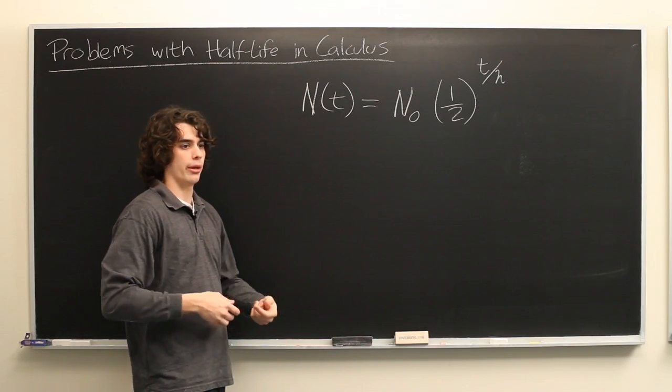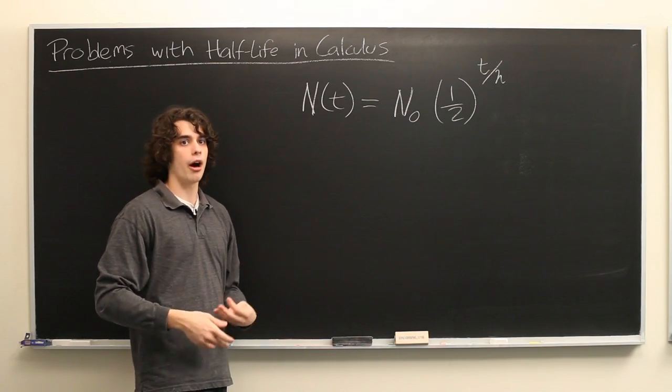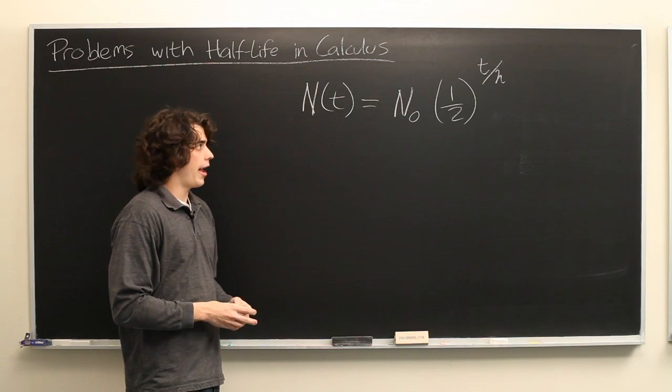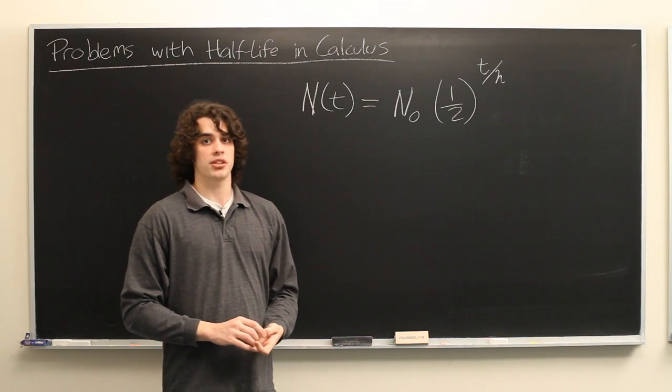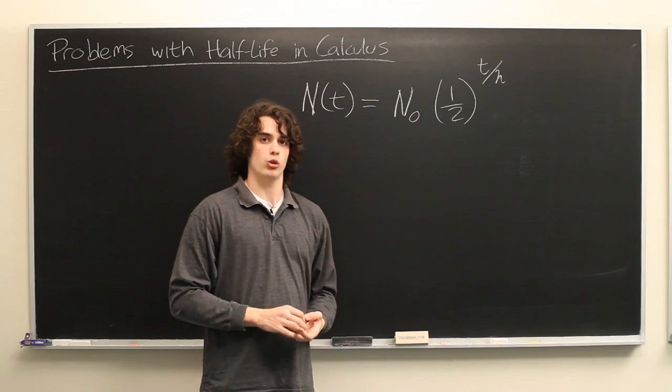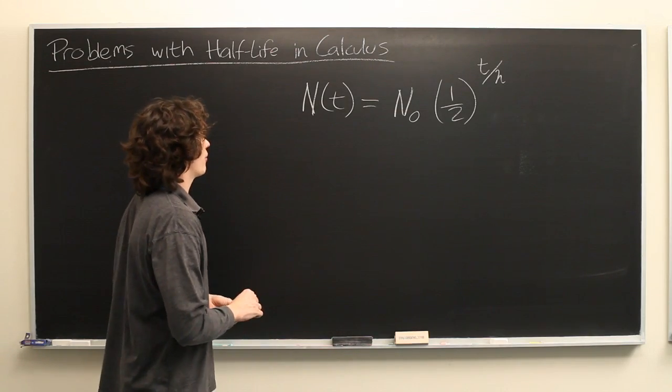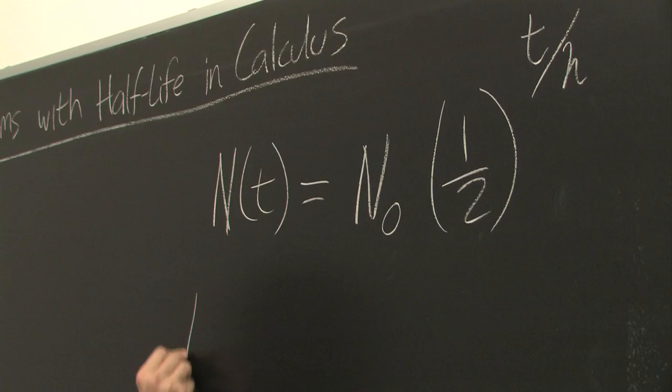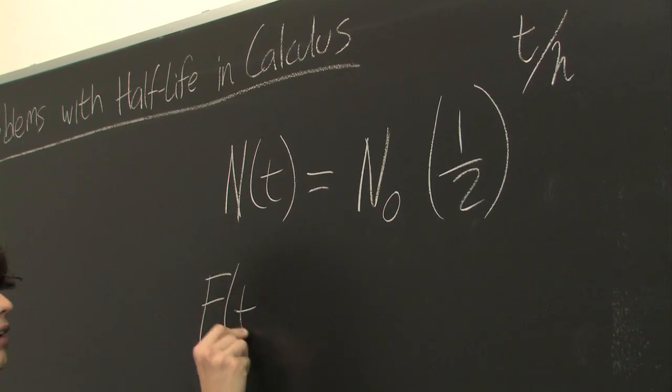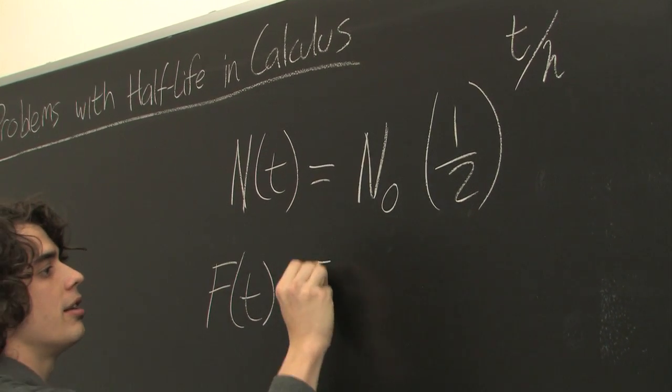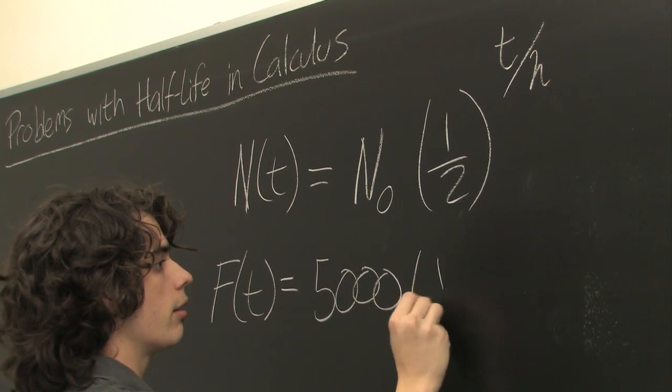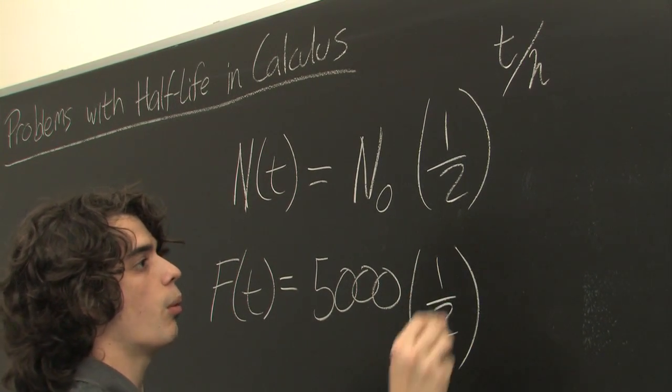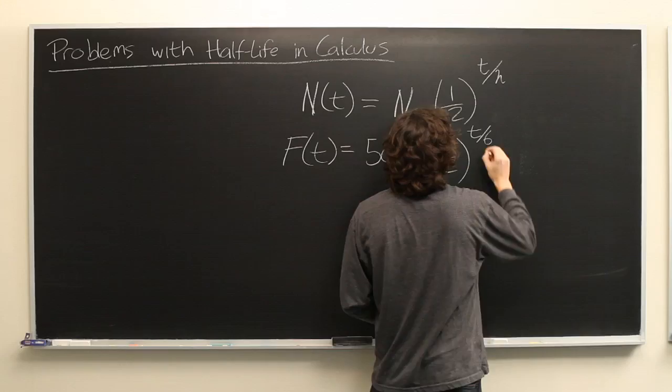Let's say that we're starting off with 5,000 atoms of francium, and we'll say, for the sake of this problem, that francium has a half-life of 6 hours. In truth, it's much shorter than that, but we'll work with that for now. And we'll say F(t) equals 5,000 times one-half to the t over 6.